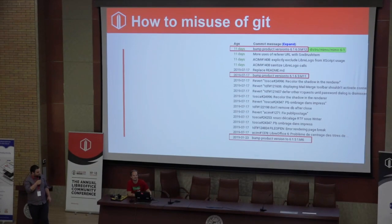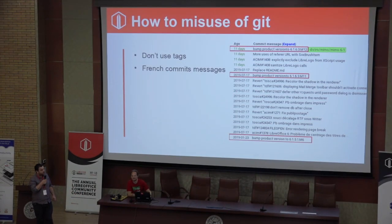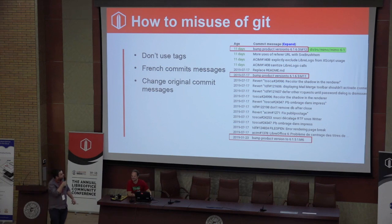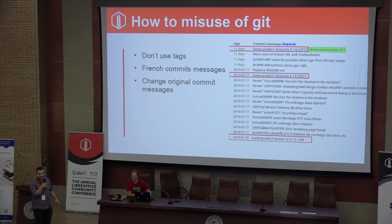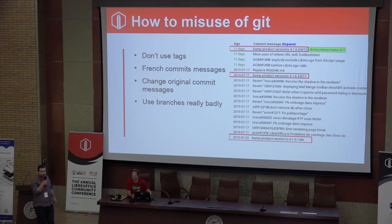How to misuse Git, of course? Just don't use tags. Don't deliver a version with tags — that's basic. French commit messages, for example: do you understand the problem 'Ombrage' in Impress? There are a lot of them if I remember correctly. Don't really use branches either, because all of this could be done with branches — a better way to make sure every commit from every version is integrated in your version.